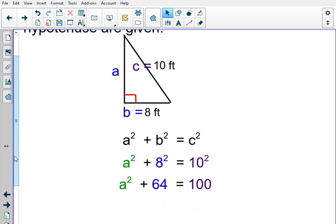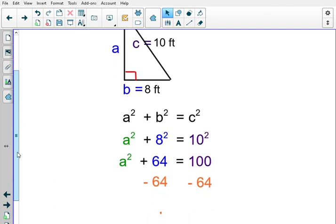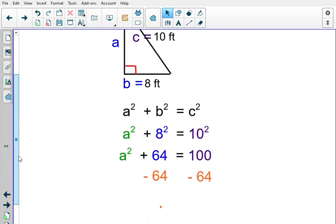If we look at this, we just have a variable that they're adding something to and that equals another number. We can use inverse operations to isolate A squared. Since they're adding 64, we're going to subtract 64 from both sides. When we do that, we are left with A squared is equal to 36.